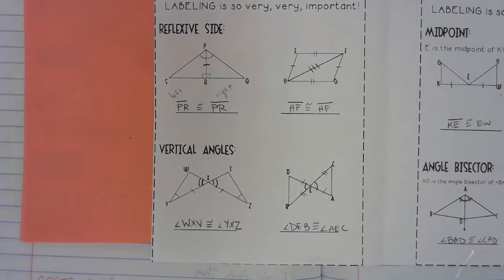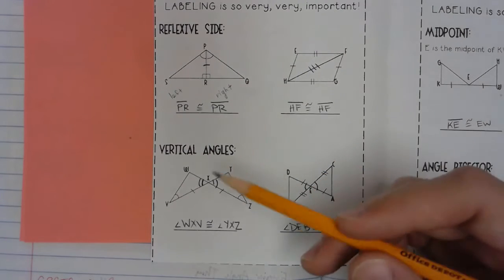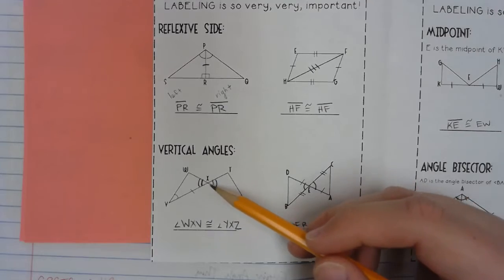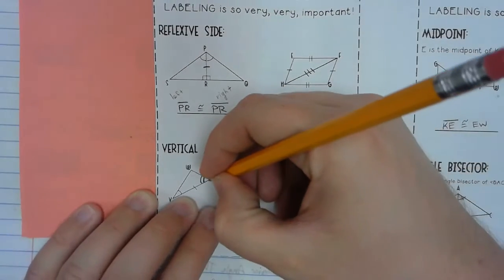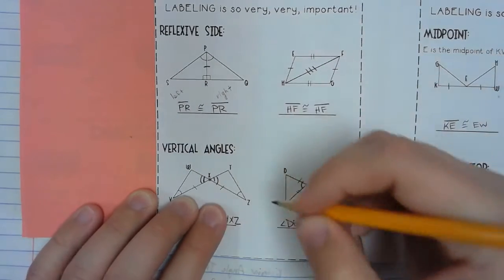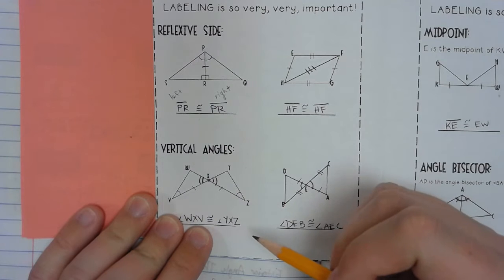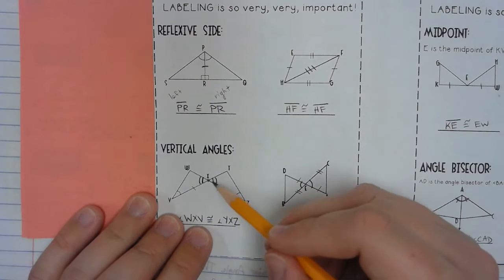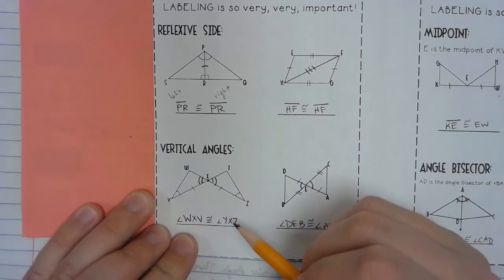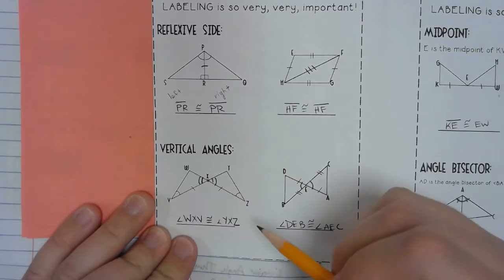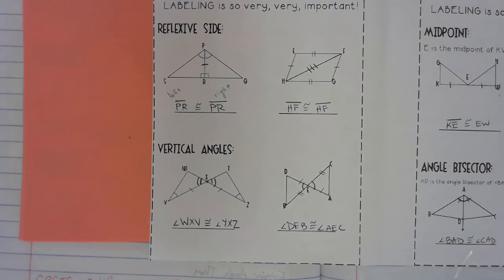Next: vertical angles. If two triangles have a set of vertical angles, then they have a set of corresponding parts. Recall that vertical angles are two angles that are non-adjacent — they don't share a side — but they are created from intersecting lines and are equal to one another. In this example, these two triangles are joined at one of their vertices. The angles are created by lines WZ and VY, and the angles resulting from their intersection are vertical angles. So we could say angle WXV and angle YXZ are congruent to one another.